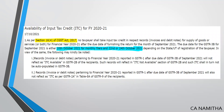As per section 16, subsection 4 of the CGST Act, no taxpayer shall take ITC in respect of records — that is either invoices or debit notes — for supply of goods or services for the financial year 2021, after the due date of furnishing the return for the month of September 2021. Section 16(4) speaks about restriction on time period for availment of input tax credit, ITC, for the financial year 2021.